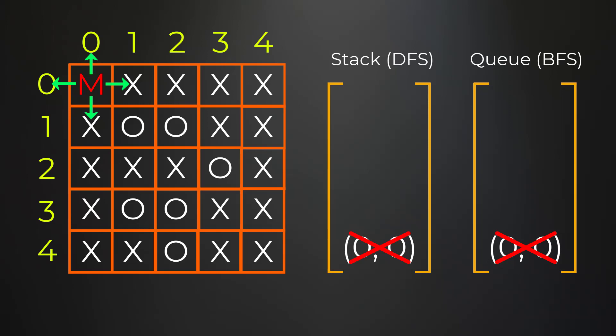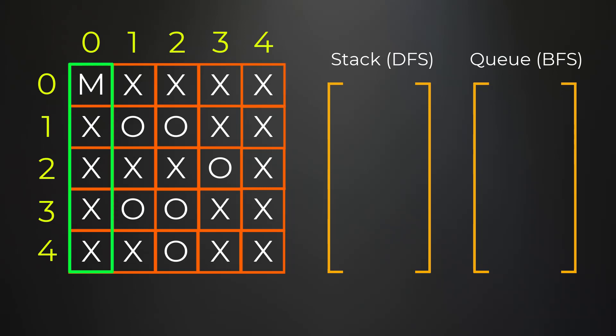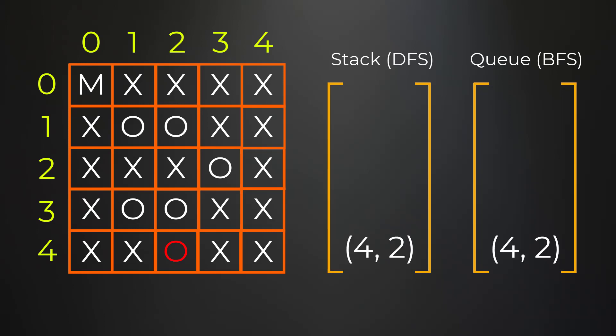Looping over the rest of the top border, they're all X's so no search needed. The left border has no O's — we already flipped that group to M. The right border also has all X's. Finally in the bottom border we find another O at position (4,2), so we start another DFS or BFS, flipping it to M.